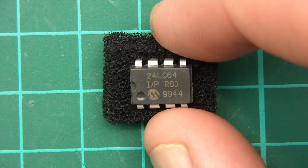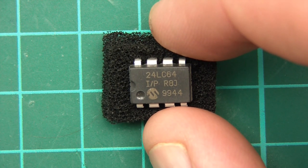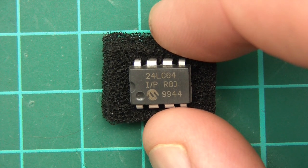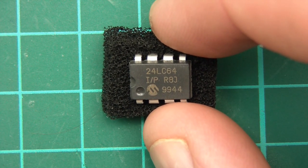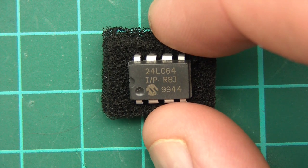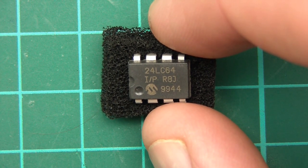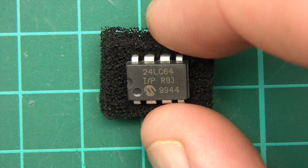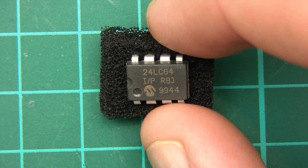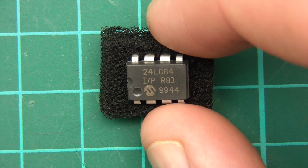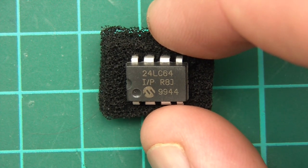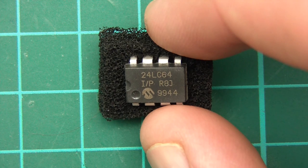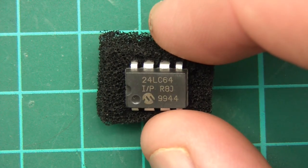So yeah, EEPROM, Electronically Erasable Programmable Read-Only Memory. So this particular one is made by a company called Microchip, and it's called 24LC64, and as you've probably guessed, the 64 indicates its memory or its capacity. So this thing is a 64 kilobit EEPROM, so it stores 64,000 bits.